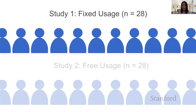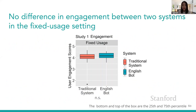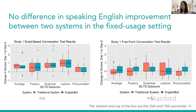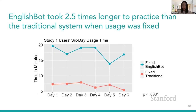From the first study, we observed no difference in users' self-reported engagement scores between the two systems in the fixed usage setting. User speaking improvements were evaluated by speaking tasks with graders using a rubric adapted from the IELTS speaking test across four metrics: fluency and coherency, lexical resources, grammatical range and accuracy, and pronunciation. We found no difference in English speaking improvement across any of the four metrics. EnglishBot took 2.5 times longer to practice the same amount of learning materials.